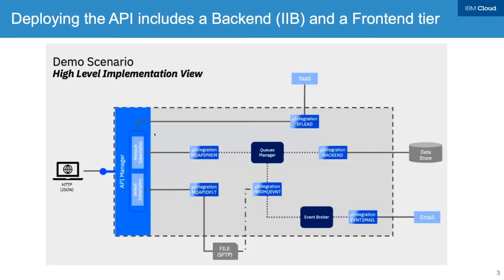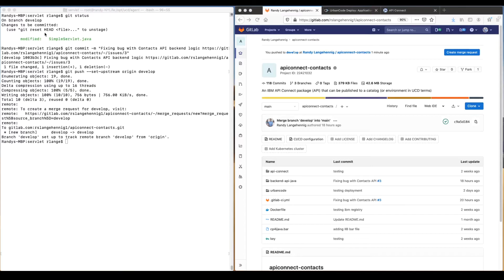On the front end, we're deploying and publishing a package to the API Manager using API Connect. For the back end, the business logic is deployed to WebSphere Liberty. As you can see, we're keeping things simple. In the real world, coordinating releases across many of the dozen parts of a larger application would be expected.